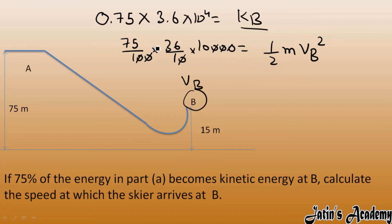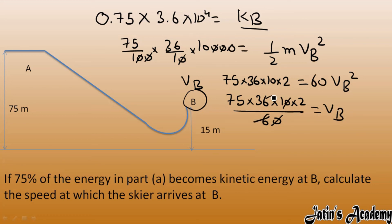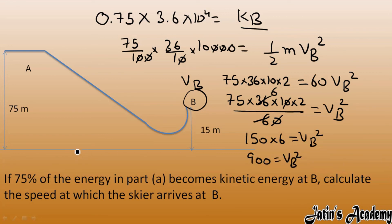Multiplying both sides: 75 times 36 times 10 times 2 on one side, and mass 60 times VB squared on the other. Dividing through by 60 and simplifying gives 150 times 6 equals VB squared, so VB squared equals 900. Therefore VB equals the square root of 900, which is 30. The velocity at point B is 30 meters per second.